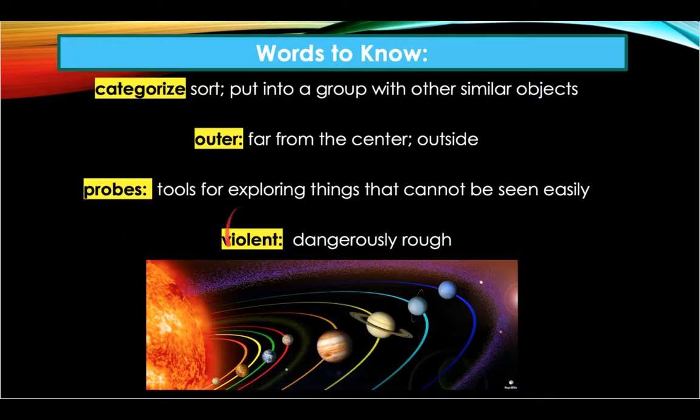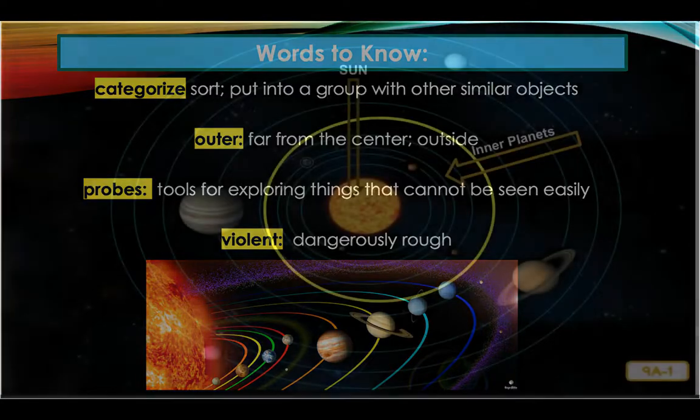The last word to listen for in our story is 'violent.' Violent means dangerously rough. An example: when I was wrestling with my brother and he got hurt, my mom said we were being too violent.